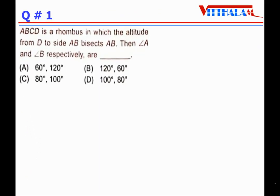ABCD is a rhombus in which the altitude from D to side AB bisects AB. We have to find angle A and angle B respectively. Let us draw this first — here is AB, and somewhere the CD vertex of the rhombus will be, and the altitude bisects AB at a point, let's call it P.